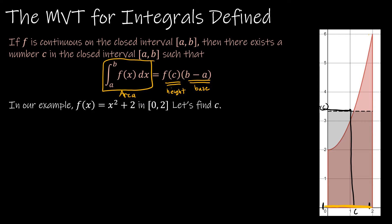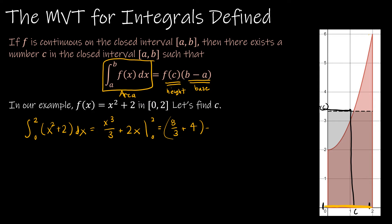Let's take a look at this example. We're integrating from 0 to 2 of x squared plus 2, which is the function I have graphed. The antiderivative is x cubed over 3 plus 2x from 0 to 2. Plugging in 2 gives me 8 thirds plus 4, and minus 0. So 8 thirds plus 12 thirds gives me 20 thirds. So 20 thirds represents the area under the curve.